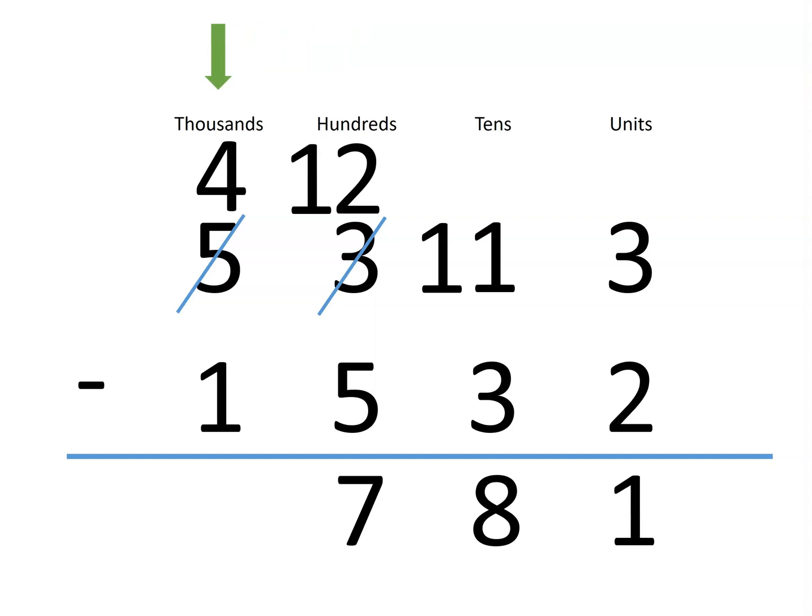Finally, we subtract four minus one, which is three, giving us a difference of 3,781.